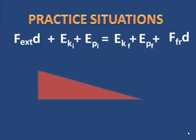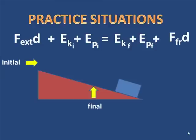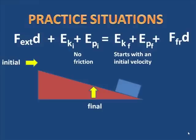Let me set up another one. We have a block on an incline and it rolls down. The bottom will be our zero reference — there's zero potential energy there. This time we want the final state to be a little bit up the incline; we want to know what the final energy state is right where that arrow is pointing. There's no friction, and it starts with an initial velocity. Hit pause and find the equation for this situation.